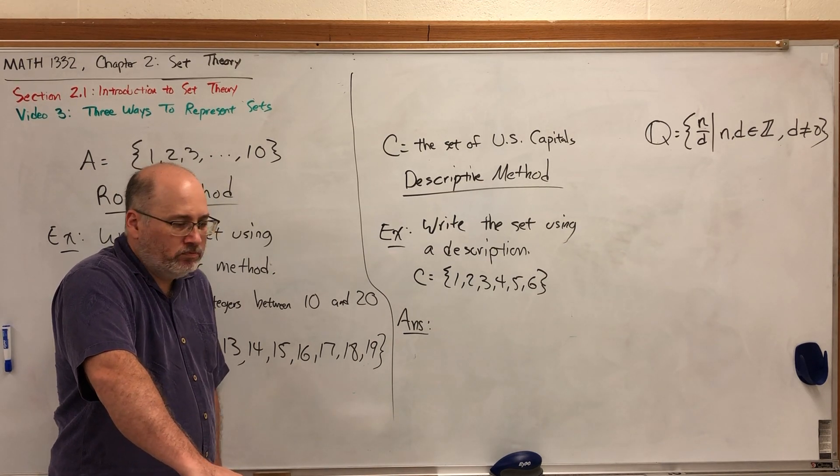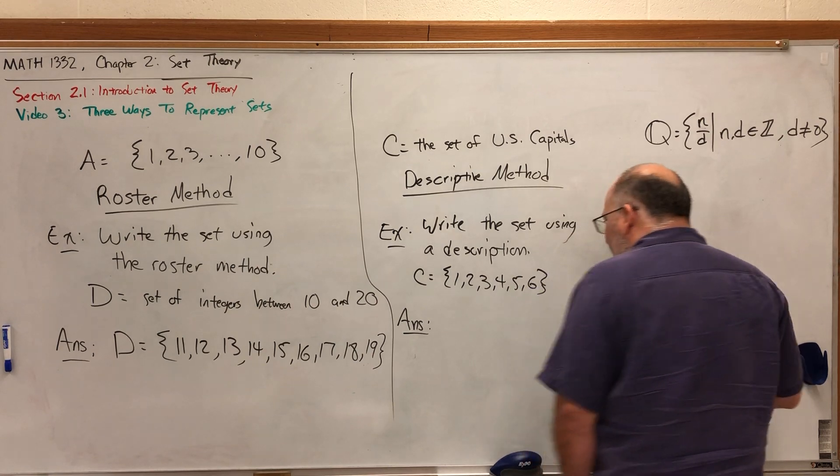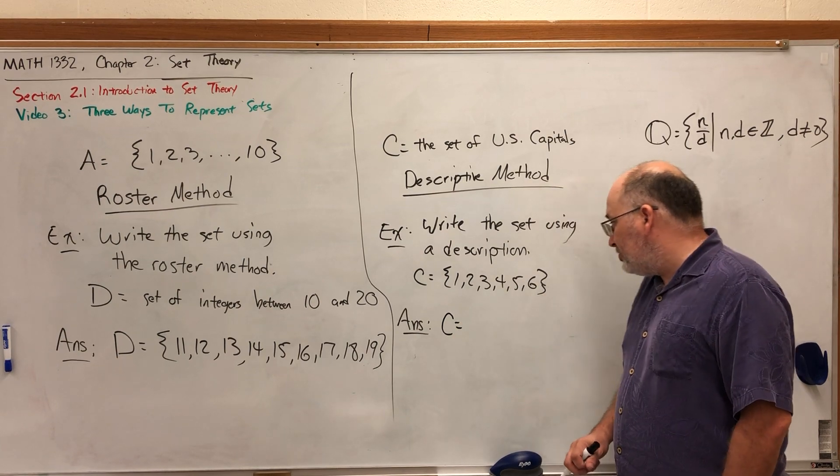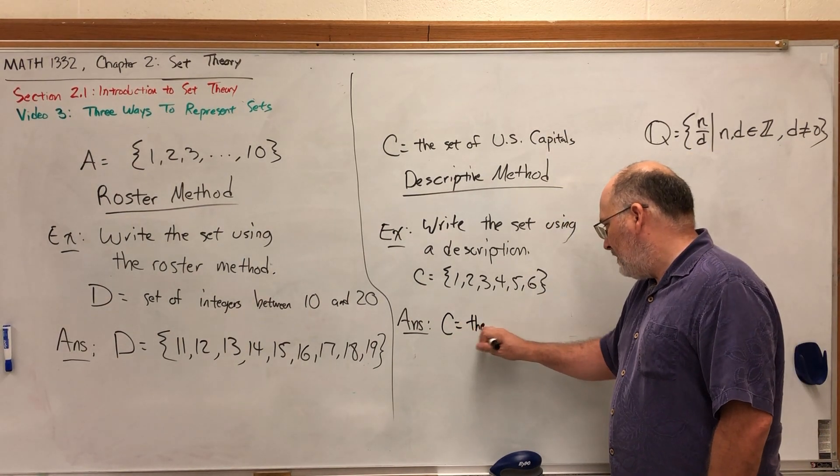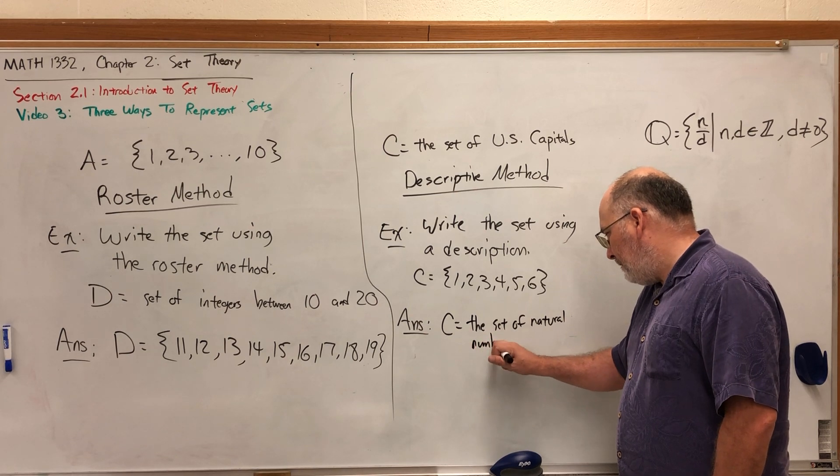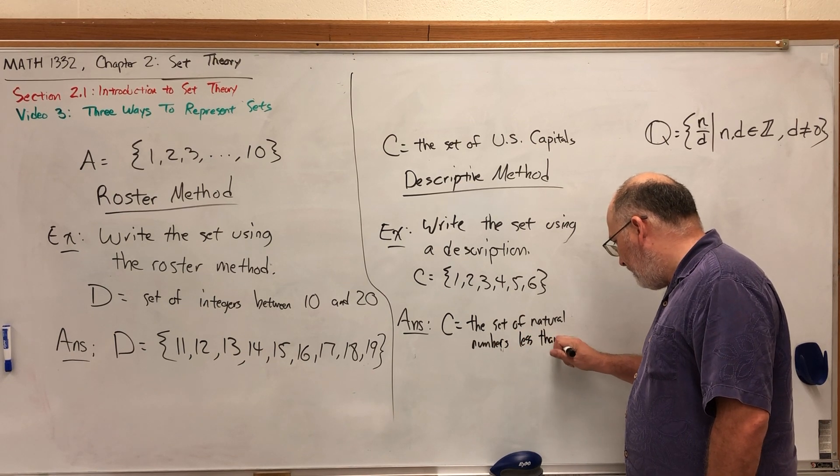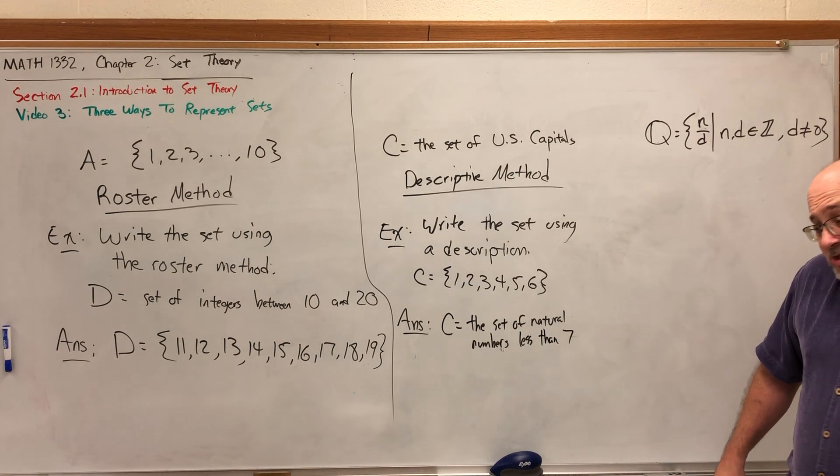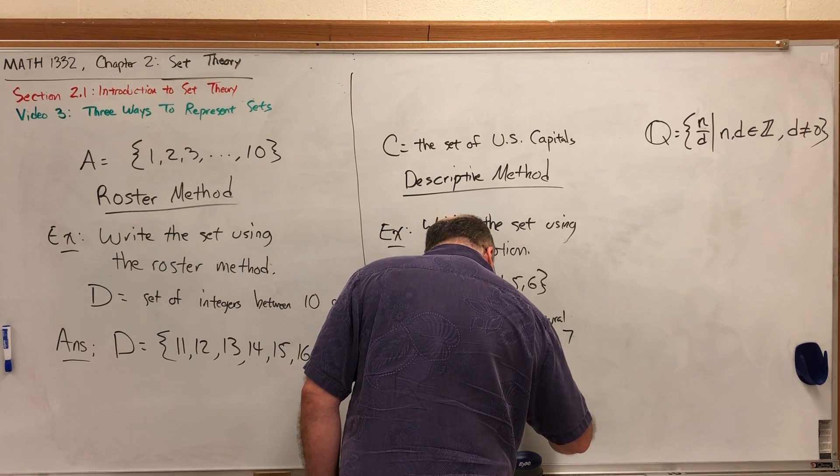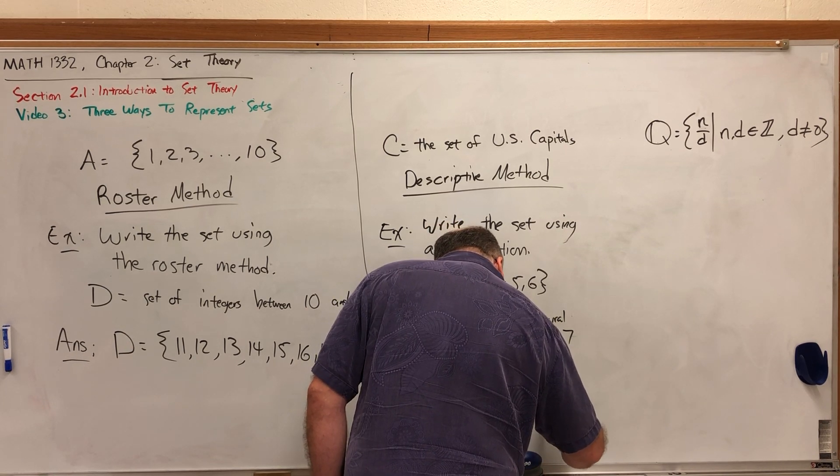Could we say natural numbers? Well we could, but that includes a lot of numbers that are missing. Remember, natural numbers start at one. So how could we describe this? Well, one way is to say something like the set of natural numbers less than seven. We could also say the set of natural numbers less than or equal to six.